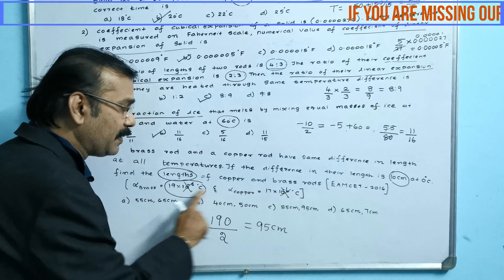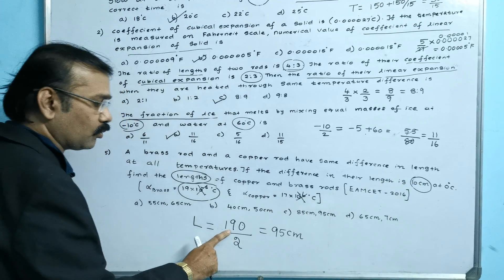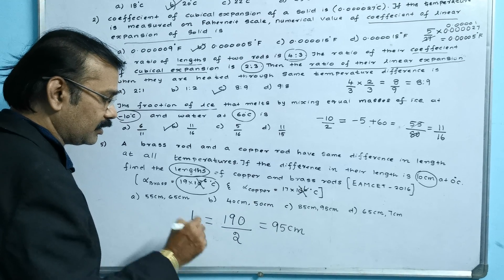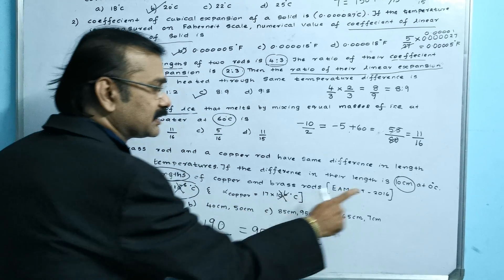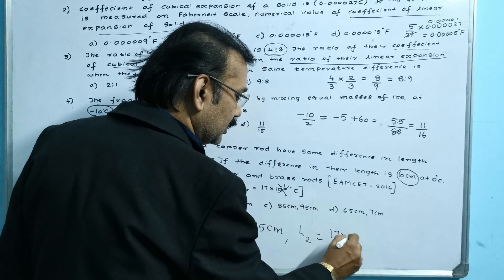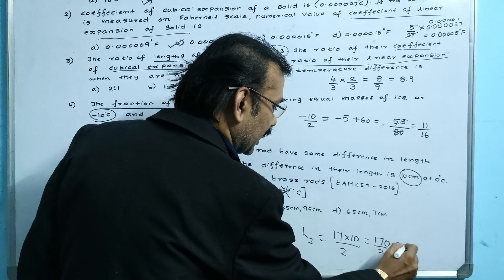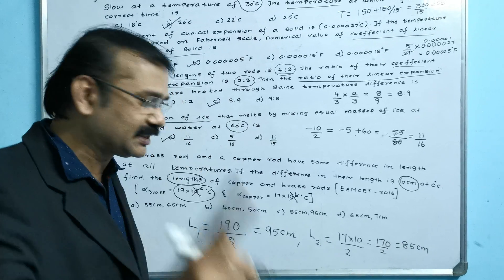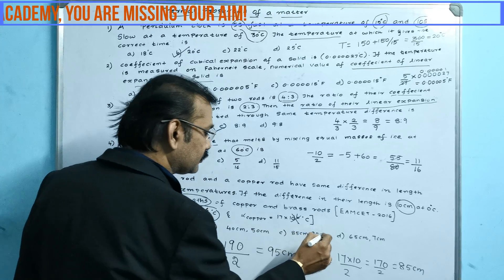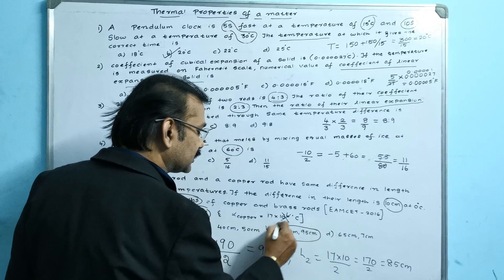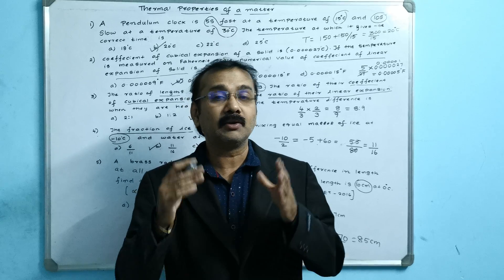For L2: multiply 17 into 10 to get 170, divide by 2 (the difference 19 minus 17), giving 85 cm. So we got both answers in a single step: 95 cm and 85 cm. Checking the options — 85 and 95 — the answer is option C. Question number 5 solved in a single step using just a few seconds.